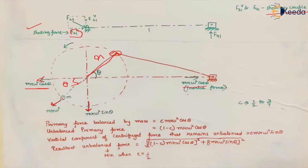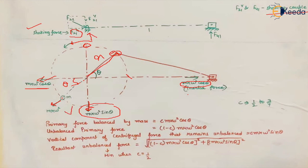The horizontal component mrω²cosθ from the counter mass balances the unbalanced mrω²cosθ due to the reciprocating masses — solving the shaking force problem. However, this creates a new problem: the vertical force mrω²sinθ. Being sine-dependent, this force is minimum at 0° and 180° and maximum at 90°, where it becomes mrω². This will cause the system to jump up and down, which is undesirable.